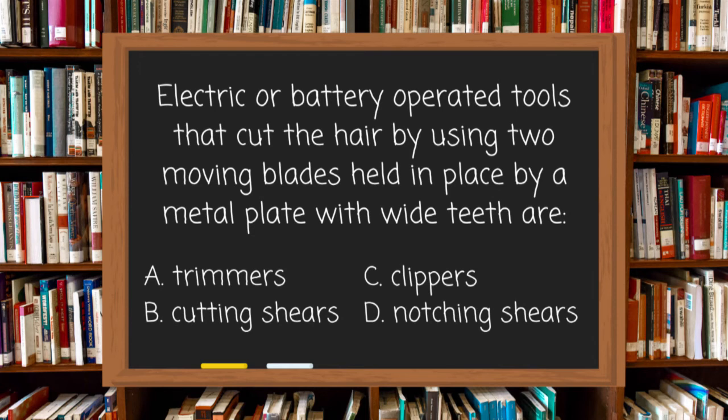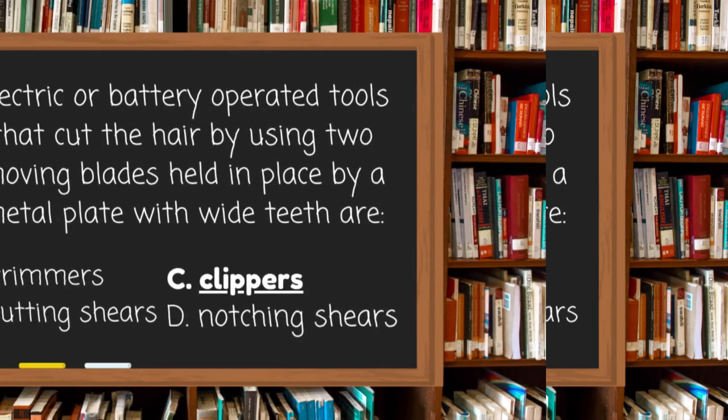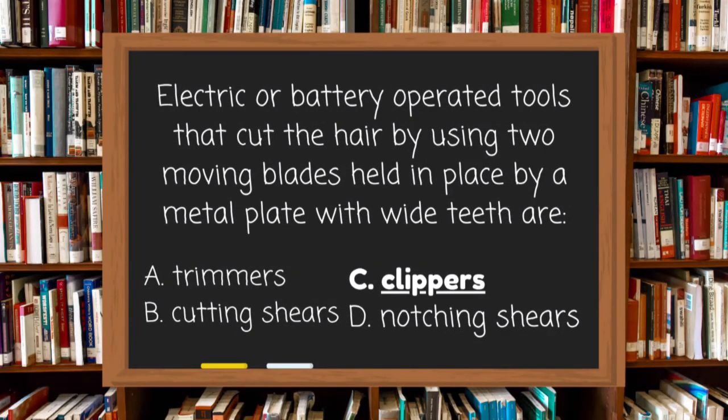Electric or battery-operated tools that cut the hair by using two moving blades held in place by a metal plate with wide teeth are: A. Trimmers, B. Cutting shears, C. Clippers, or D. Notching shears. The answer is C, clippers.